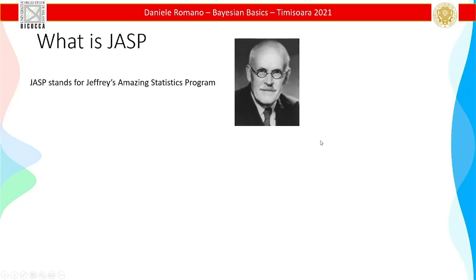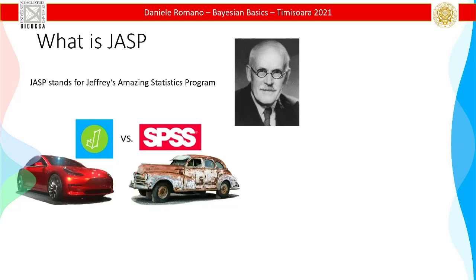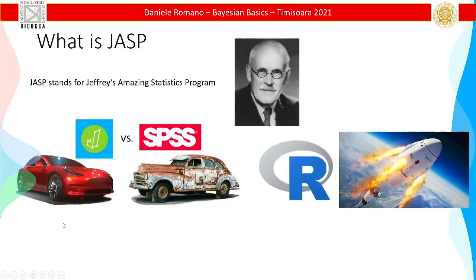JASP means Jeffrey's Amazing Statistical Program — Jeffrey is one of the main developers of Bayesian statistics. In JASP, you still stick with their rules. If you want your own rules, you have to switch to R. This is a good reason why to switch to R — you have all the flexibility you want. In Bayesian statistics, if you become expert, you really want that flexibility. As a naive user of Bayesian statistics, JASP is wonderful. It's amazing.